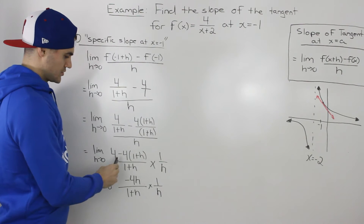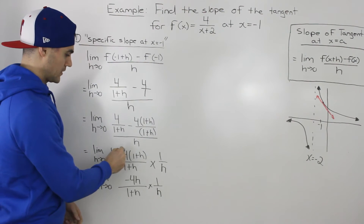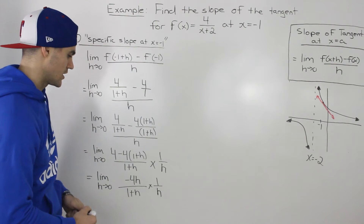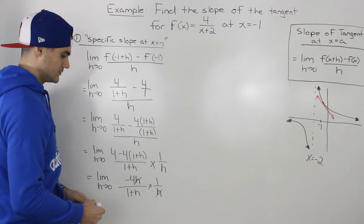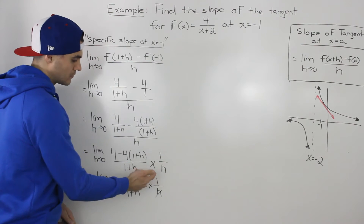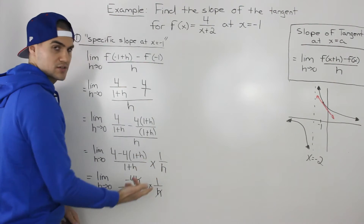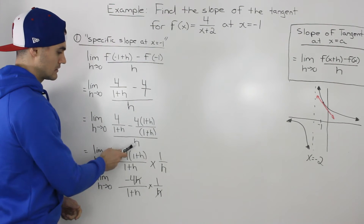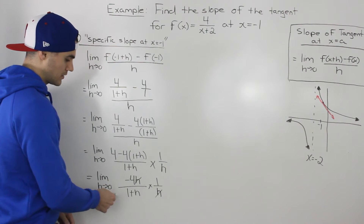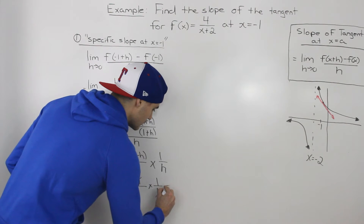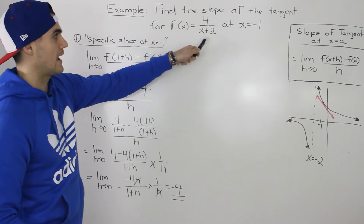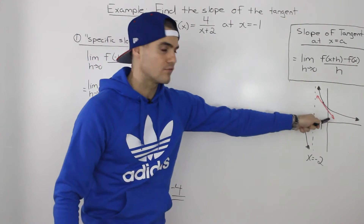Simplifying the numerator: 4 minus 4 cancels to 0, leaving -4h in the numerator, still over (1+h), multiplied by 1/h. Notice the h's cancel out. Once they cancel, we can plug in 0 for h — previously plugging in 0 would have given 1/0 which is undefined, so we always cancel that h first. After canceling, we're left with -4/(1+h), and plugging in 0 for h gives us negative 4. That is the slope of the tangent at x = -1.